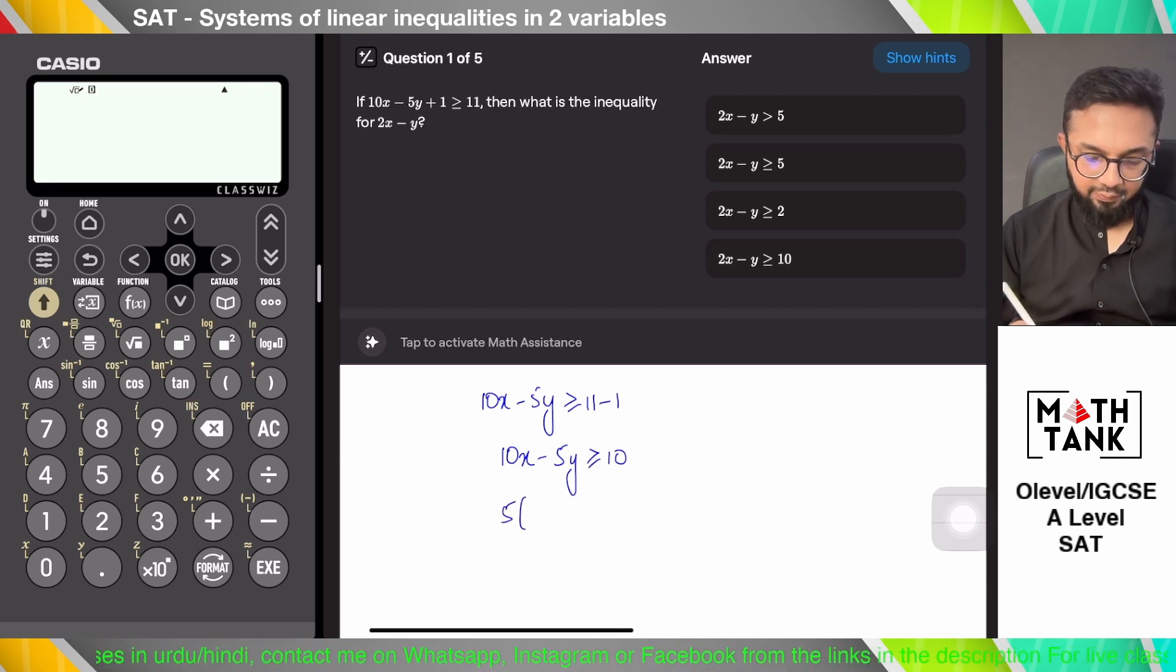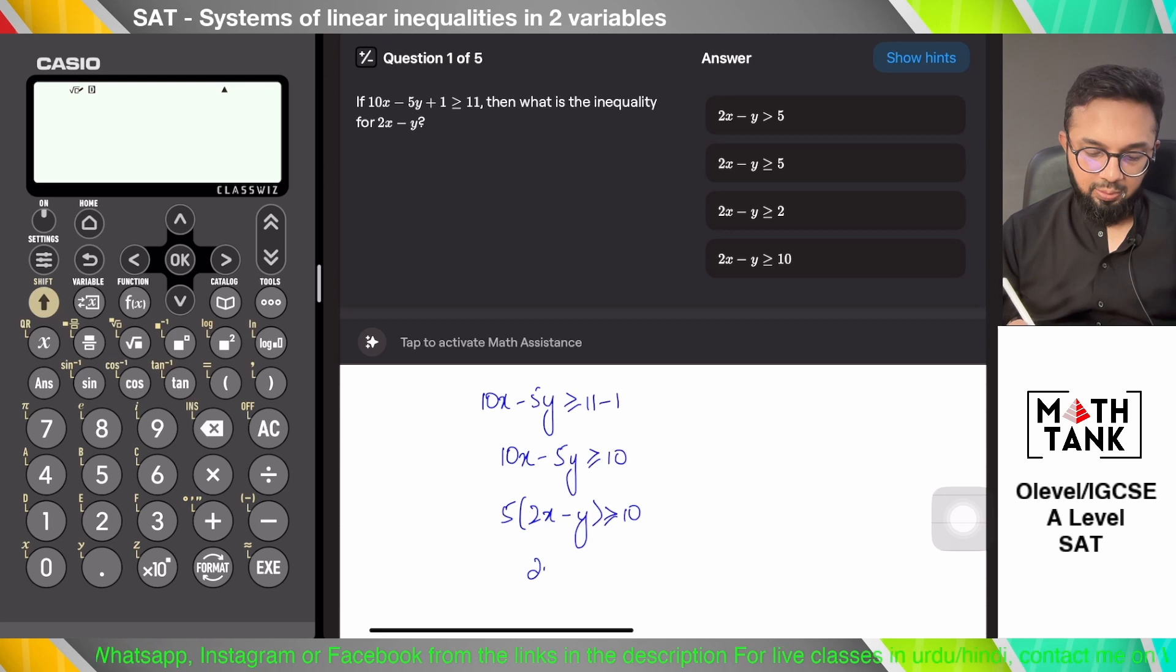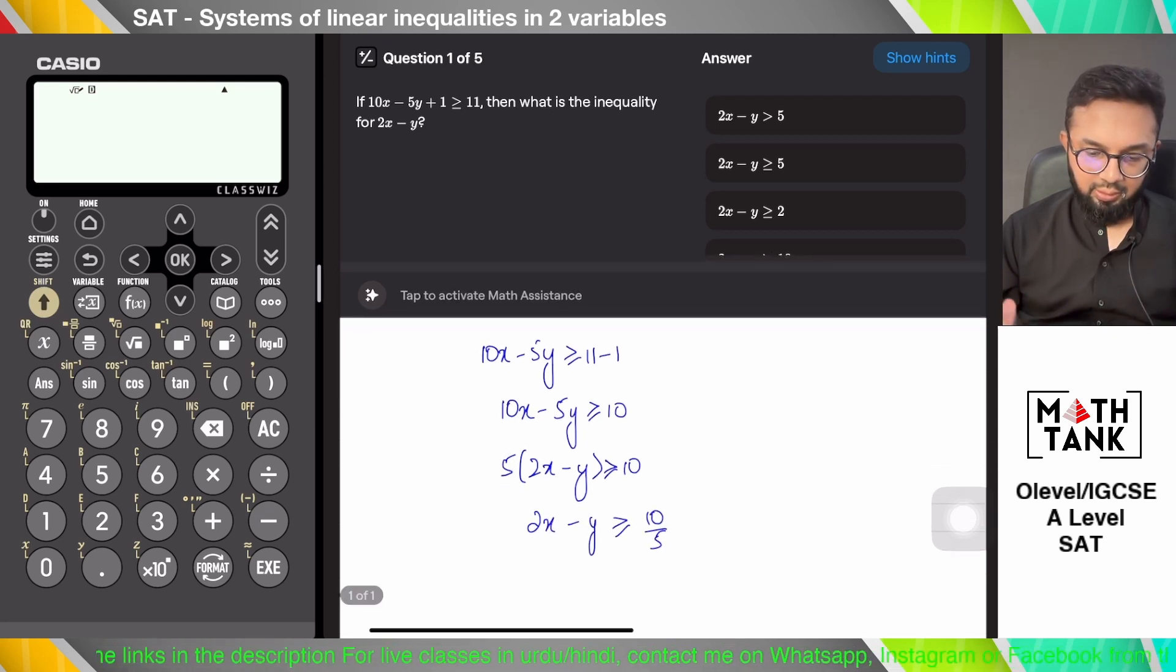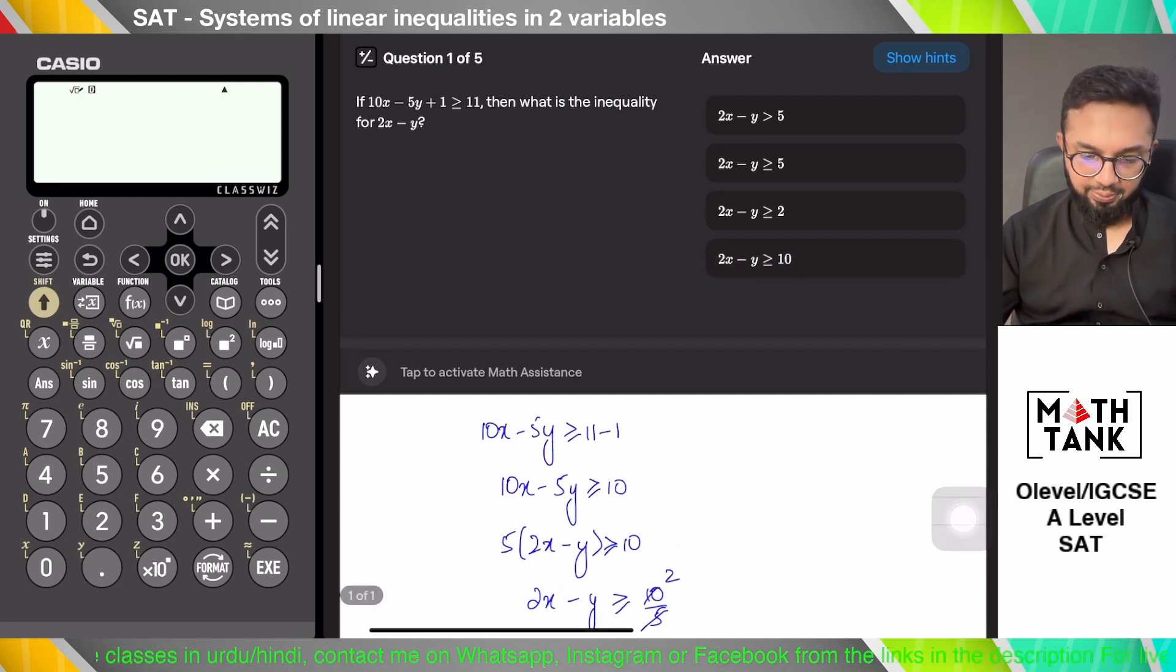Let's factor out 5. 5 times 2x minus y is greater than or equals to 10 over 5. 5 times 2x minus y is greater than or equals to 2. Yes.